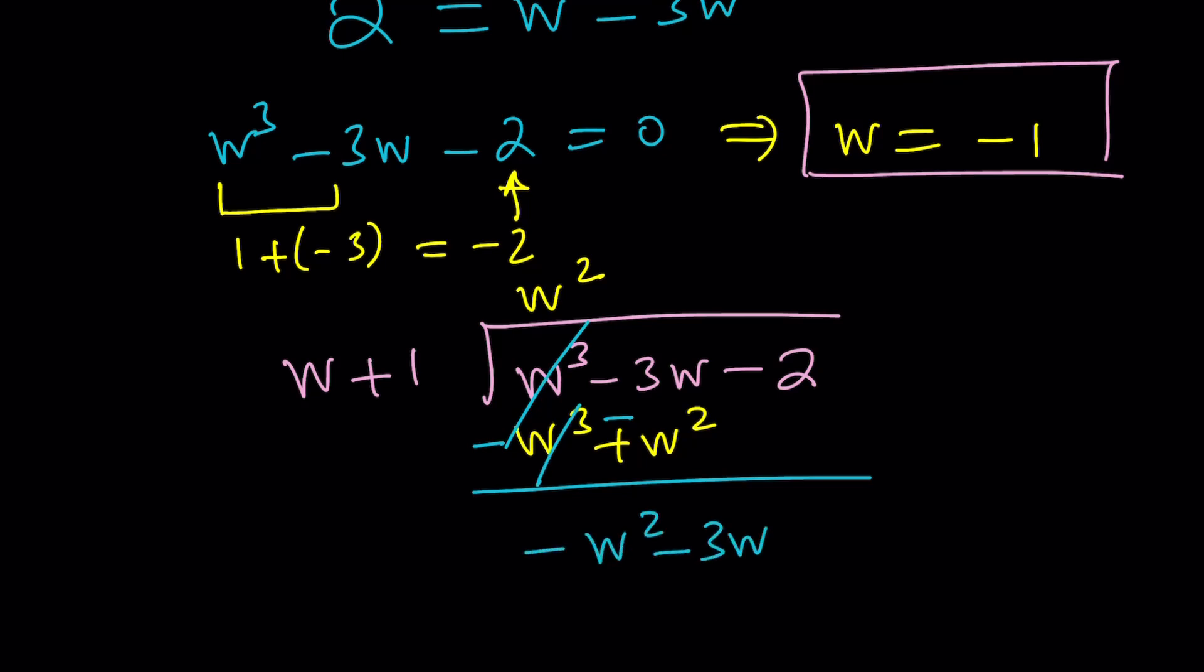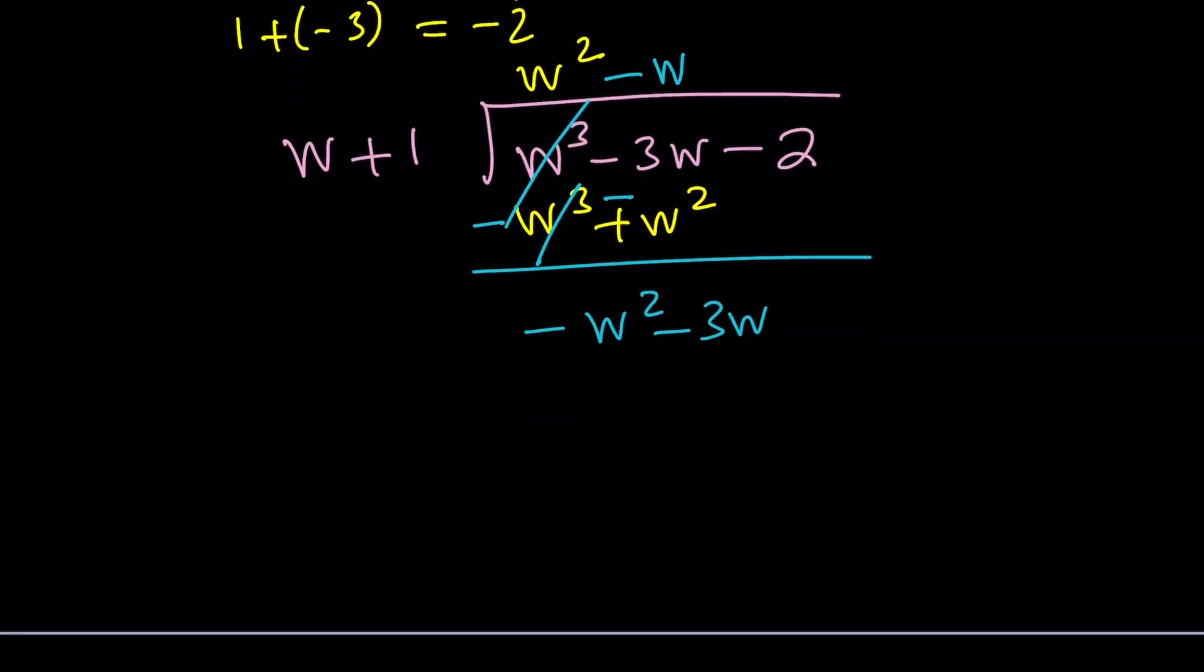And now w into negative w squared, negative w times. Distribute negative w squared minus w. Negate plus plus. Draw the line. Add them up. You get negative 2w. Bring down this. And you'll see exactly negative 2 times. Of course, that needs to happen because we know that there's no remainder, right?